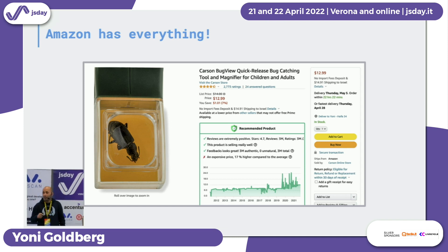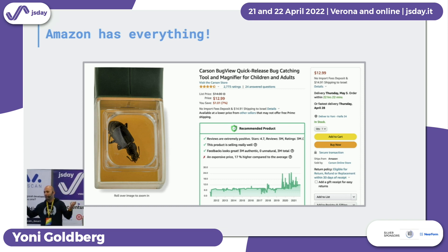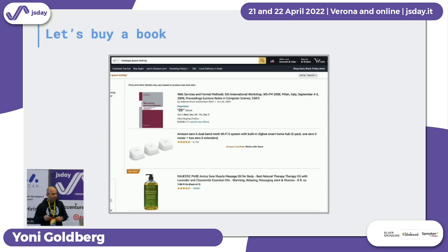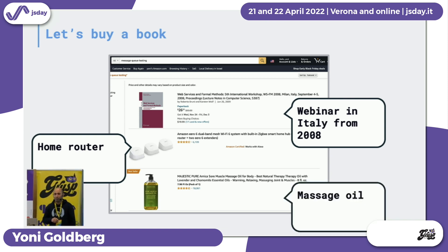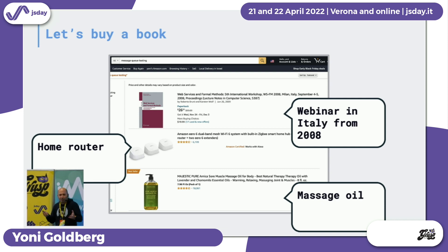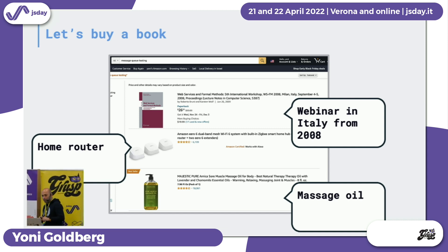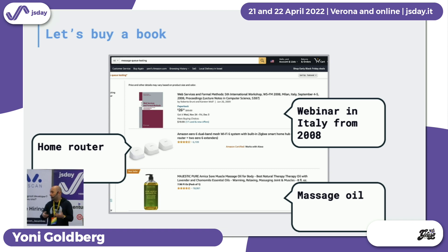Then I searched Amazon for a 'message queue testing book.' The first result was about some webinar from Milan in 2008, not about message queues. The second was about a home router. And the third — Amazon's search engine was completely confused about what 'message queue testing' means. This knowledge doesn't exist in literature, only inside companies. I hope to summarize it well today.